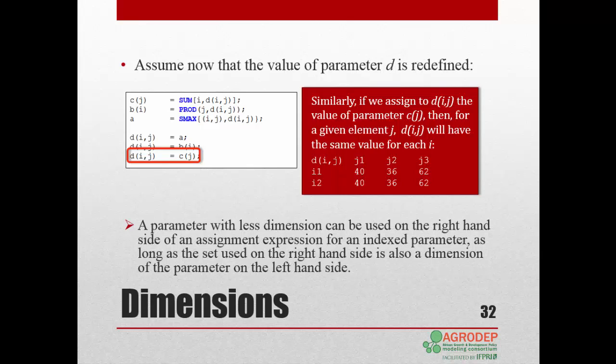Similarly, if we assign to dij the value of parameter cj, then all the rows i of d will be the same. Again, the parameter on the right-hand side of the assignment expression has less dimensions than the parameter on the left-hand side. This is fine as long as the set used on the right-hand side is also a dimension of the parameter on the left-hand side.